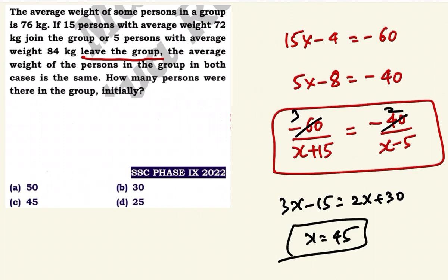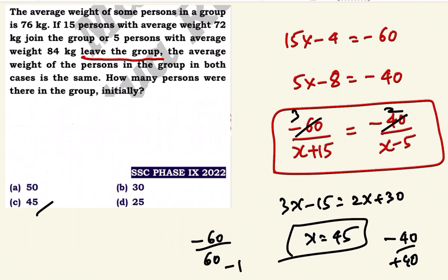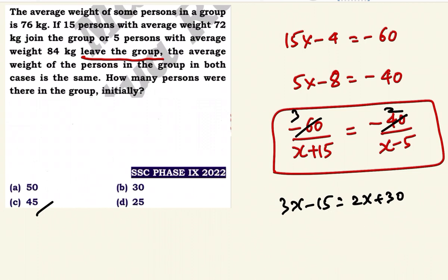Initially there are 45 persons in the group. The x value is 45. Let's verify: 15 into minus 4 is minus 60. The average deviation for the leaving case: 5 into 8 is 40, so minus 40. The x value is 45.